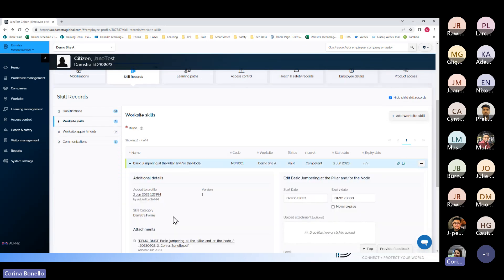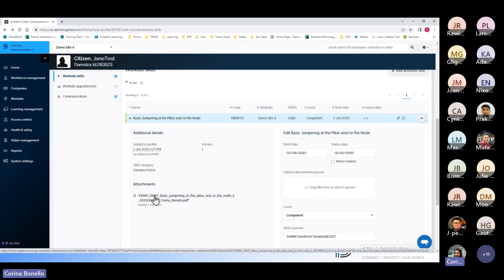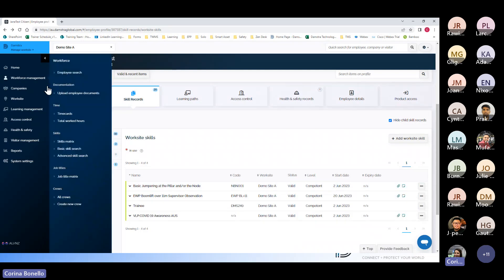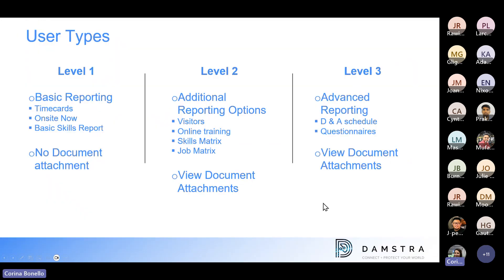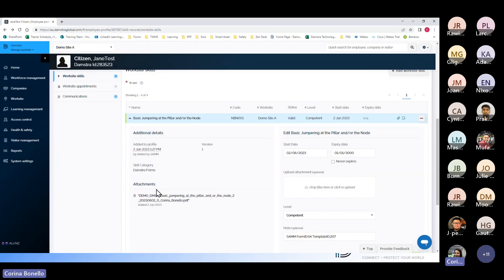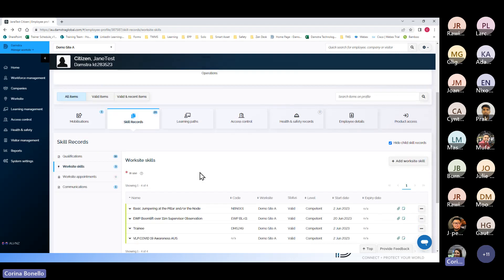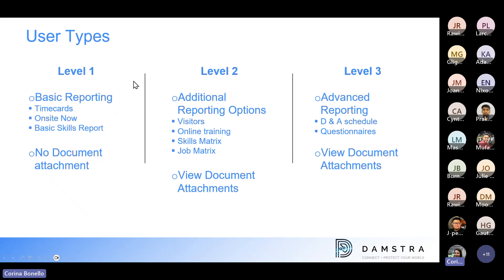Level two users can go in and expand on skills and view those actual skills, and also have access to skills matrices and more in-depth reporting. The last level we have is level three users. Level three users have all the same reporting as level one and level two, but also access to advanced reporting such as DNA schedules and questionnaires, and they're also able to view document attachments — they can expand on skills and look at those skills.